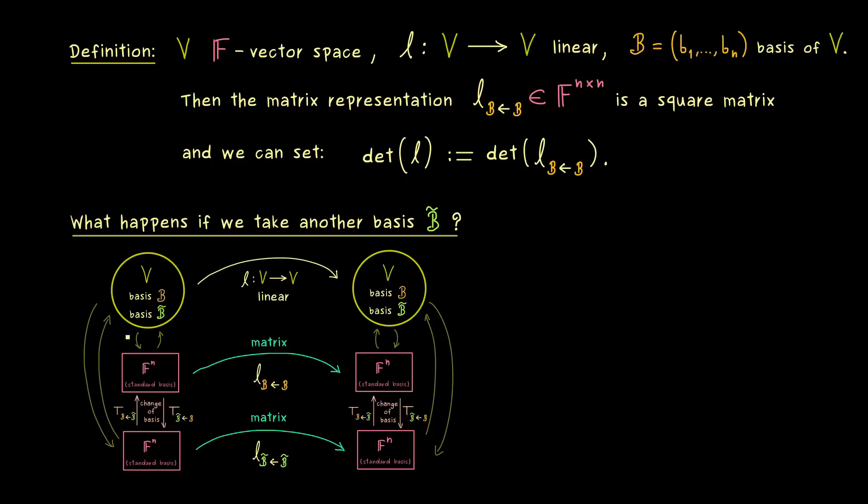This is it, and there you see, we have two levels. On the upper level, the abstract linear map L. And on the lower level, we have the two matrix representations LBB and LB tilde B tilde. So we already know, these matrices could be different, but they are connected by a change of basis matrix. More precisely, we have a composition or a matrix product that satisfies this equation here.